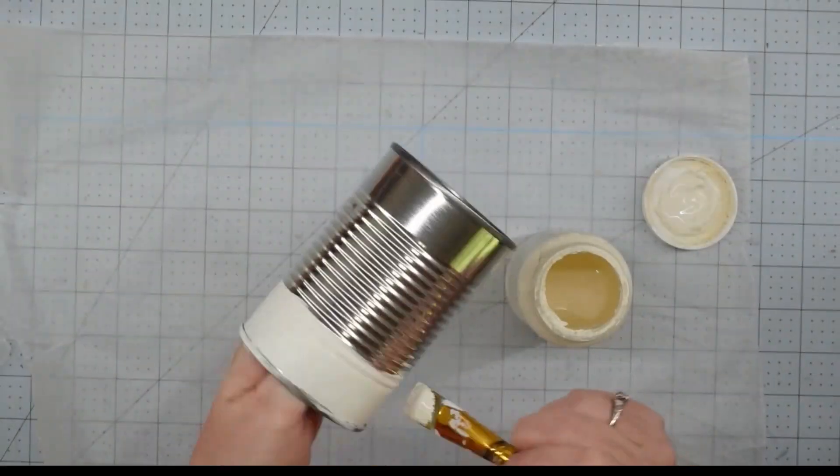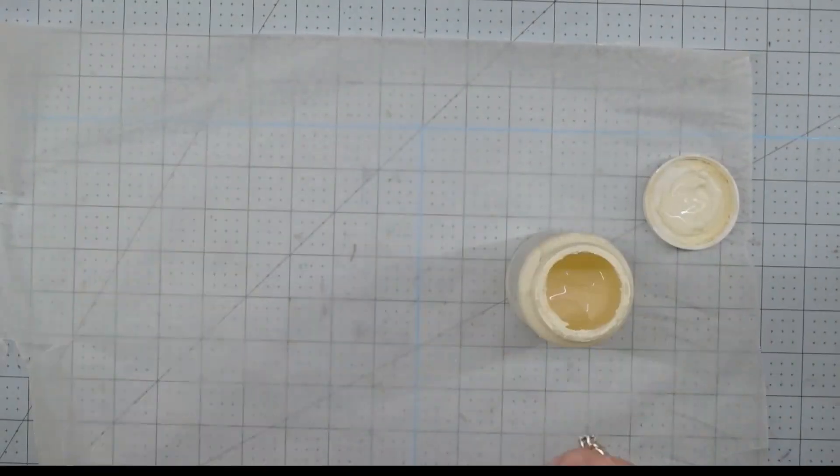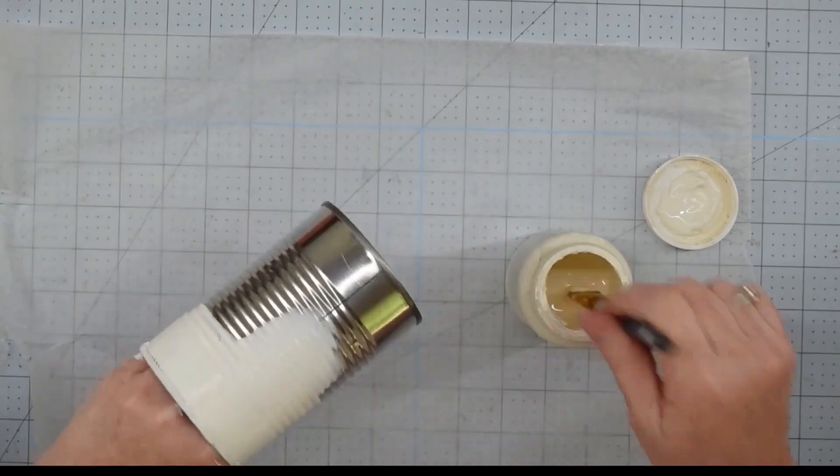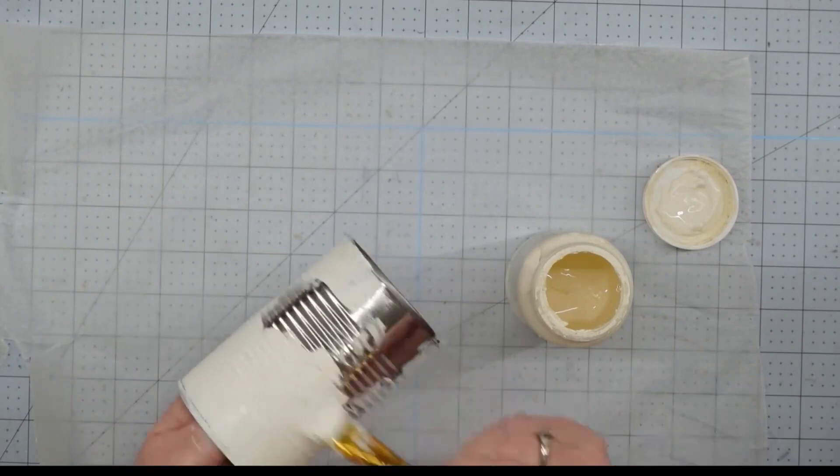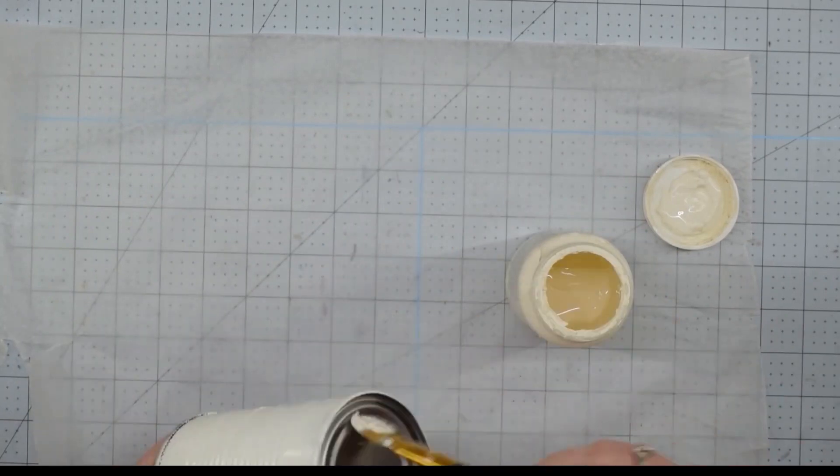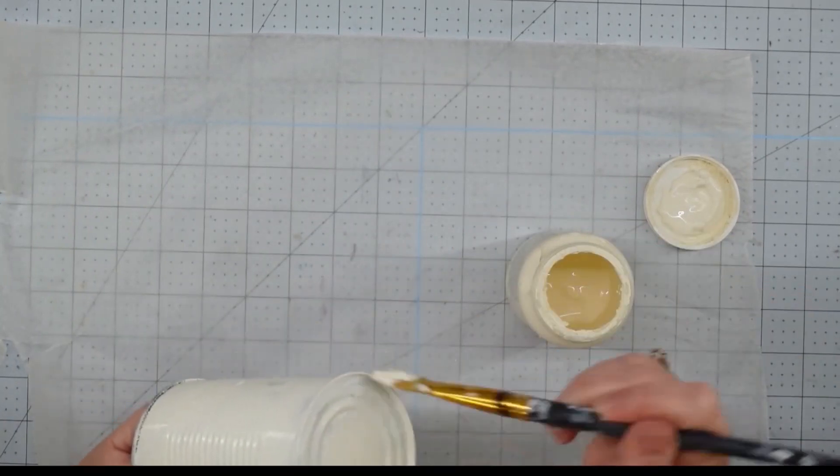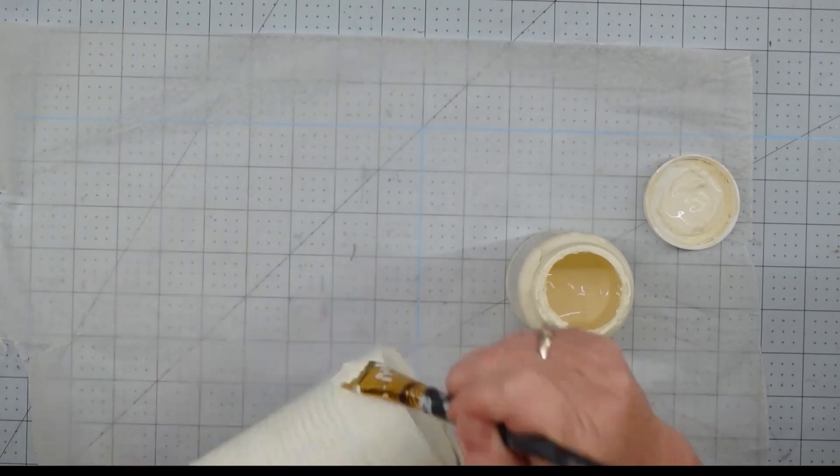For this trash to cash project, I'm going to be using this old can that I took out of the trash. I decided that I wanted to cover the silver, so I took my Waverly chalk paint in ivory, and I gave it a really good coat on the sides and the bottom, and I'm going to set it aside and let it completely dry.